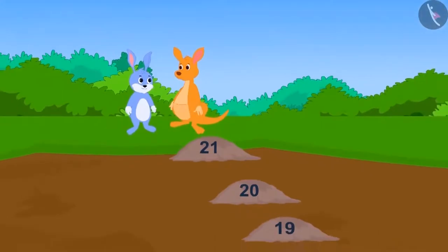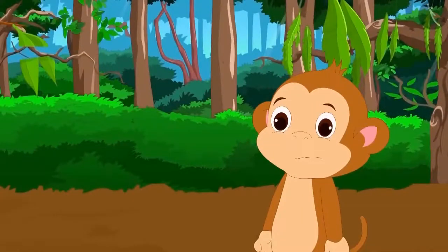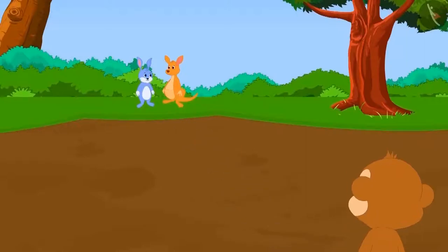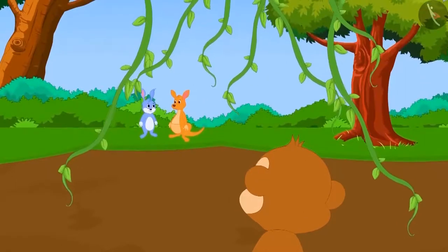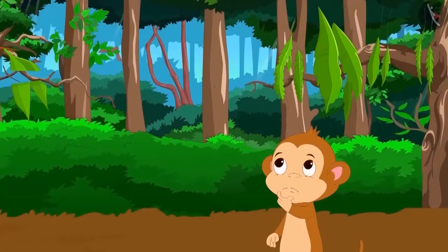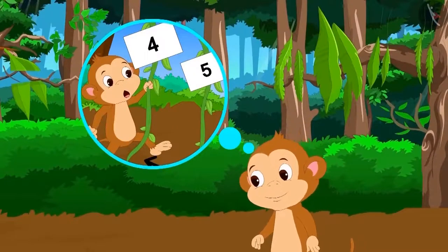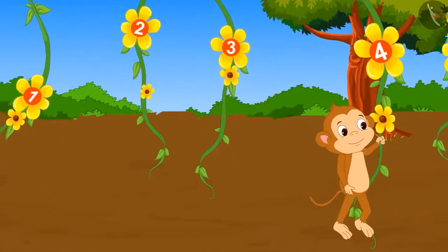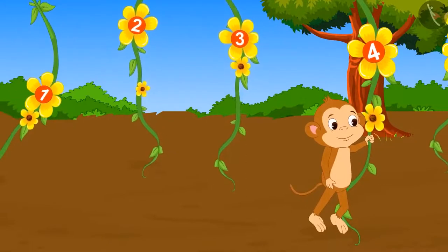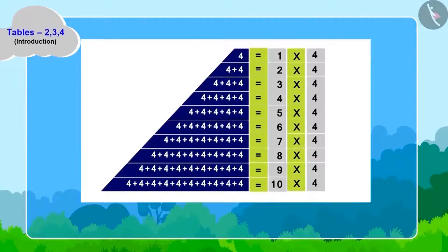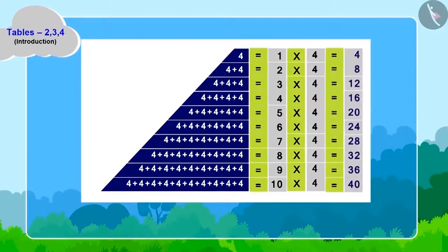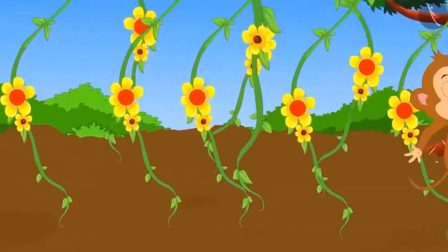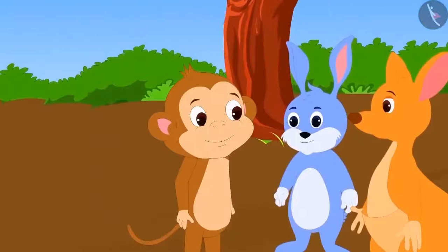Now Kittu and Bunny had crossed but Babban was still on the other side. Suddenly all the stones got buried in the swamp. Babban spotted creepers hanging above. Babban can cross four creepers in one jump — he took the first jump and hung to the fourth creeper. By adding four to each jump, the table of four is ready, and Babban also crossed the swamp.